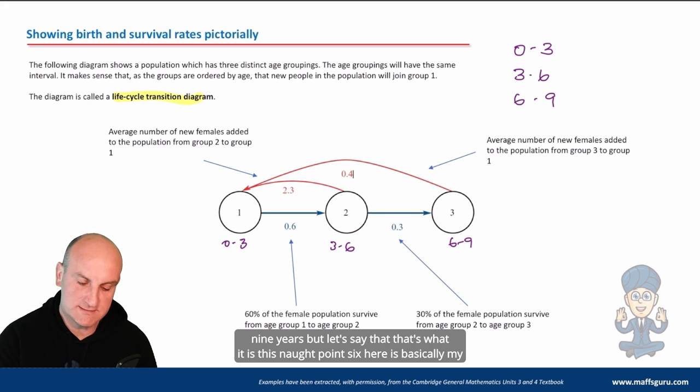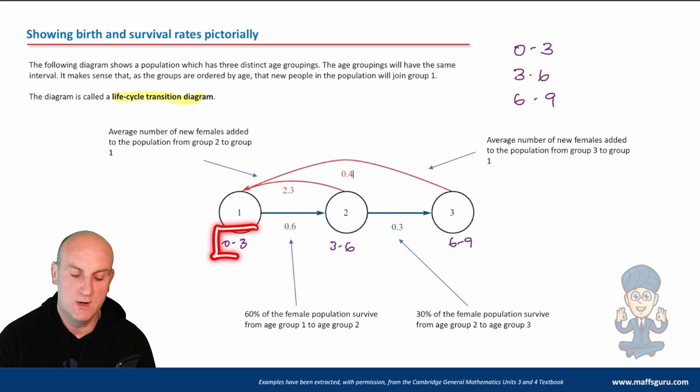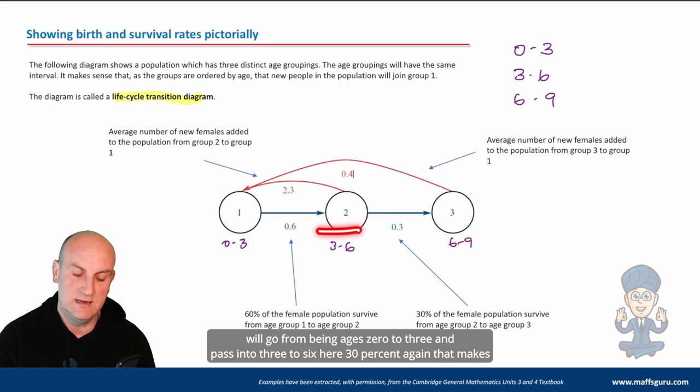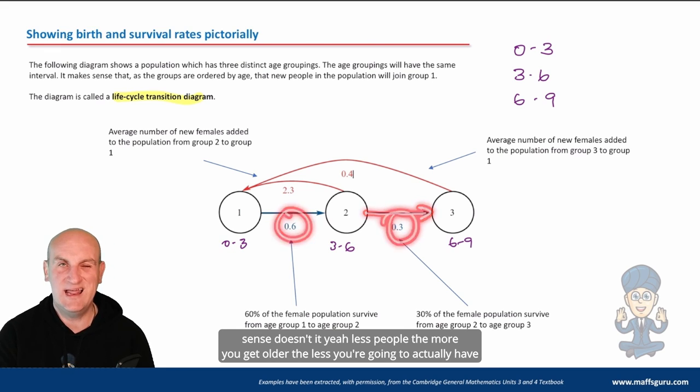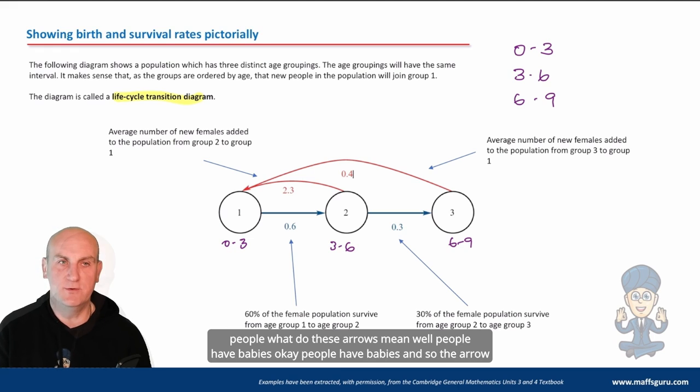This 0.6 here is basically my survival rate. So 60% of the people in group one will survive through to group two. So 60% of people will go from being ages zero to three and pass into three to six. Here, 30%. That makes sense, doesn't it? Less people, the more you get older, the less you're going to actually have people.